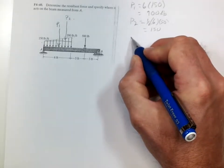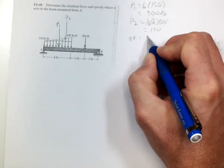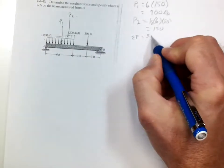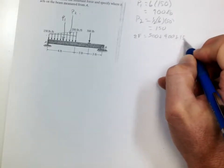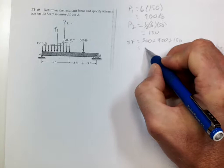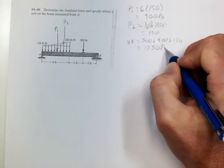And so the total force, if we sum the forces, is 500 plus 900 plus 150, which equals 1550 pounds.